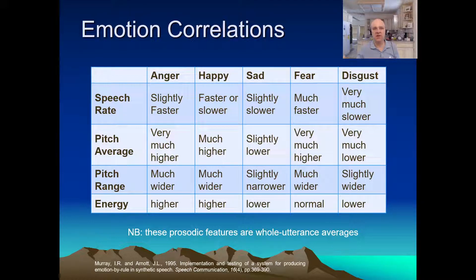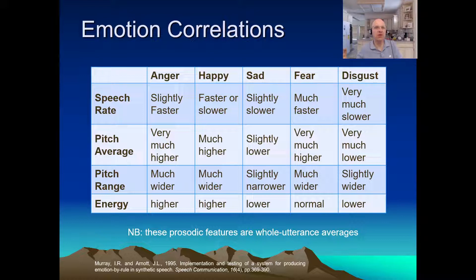The ones in the table are classic mid-level features, classically computed as averages over entire utterances. Subsequent work has explored more specific mid-level features to better pin down what's actually going on. For example, anger often turns out to be relatively louder specifically on consonants. Correlations are not the whole story — configurations are also part of what's going on.